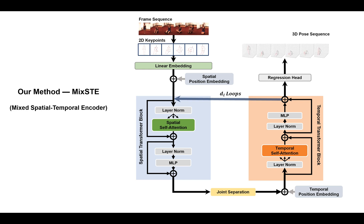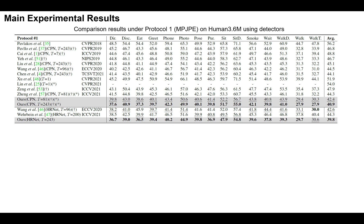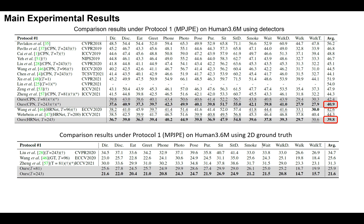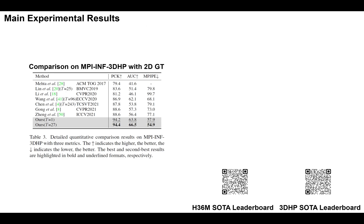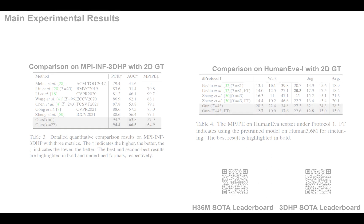At last, we regress the features to a 3D pose sequence, and two loss functions are used to supervise precision and consistency. Here are our comparison results under MPJPE on the Human 3.6M benchmark using the CPN detector. The red circle indicates our best performance, and the bottom table shows results using 2D ground truth. The main experimental results show that MixSTE, as a seq-to-seq method, first outperforms seq-to-frame methods. We also present other results on 3DHP and HumanEVA benchmarks.